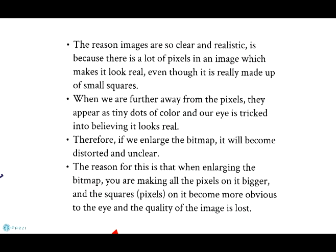The reason images are so clear and realistic is because there are a lot of pixels in an image, which makes it look real even though it is really made up of small squares. When we are further away from the pixels, they appear as tiny dots of colour and our eye is tricked into believing it looks real. Therefore, if we enlarge the bitmap it will become distorted and unclear. The reason for this is that when enlarging the bitmap you are making all the pixels on it bigger, and the squares become more obvious to the eye and the quality of the image is lost.